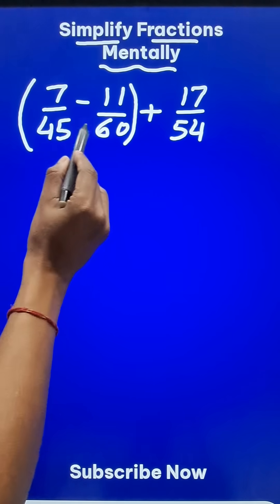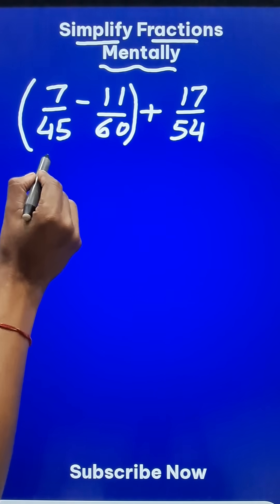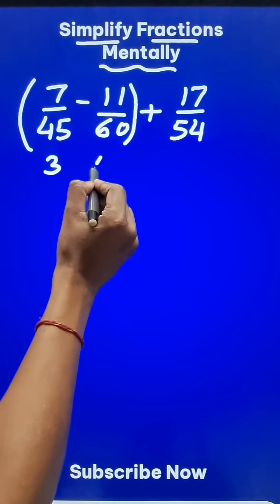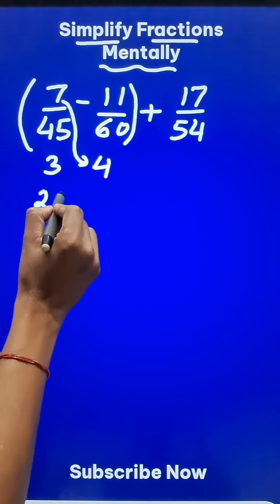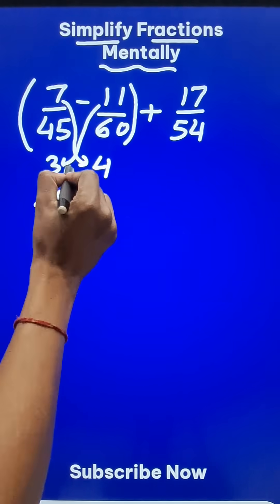And I know that 45 and 60, they go into 15. So 15 times 3 is 45 and 15 times 4 is 60. Now go across like this: 7 times 4 is 28 minus 11 times 3 is 33.